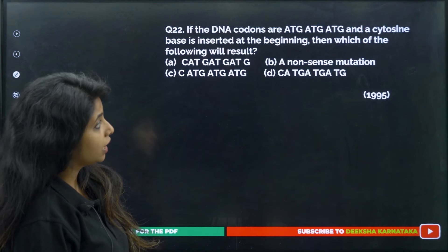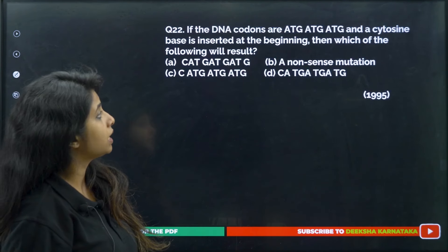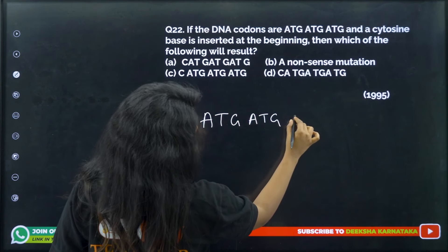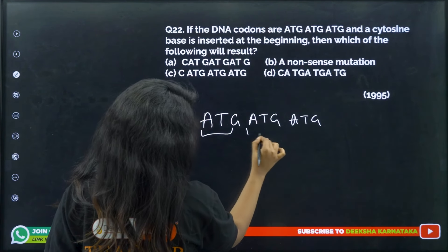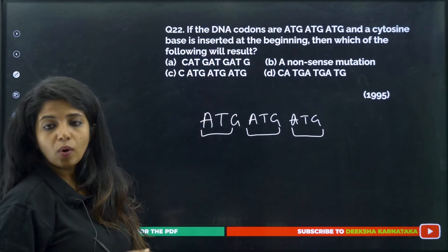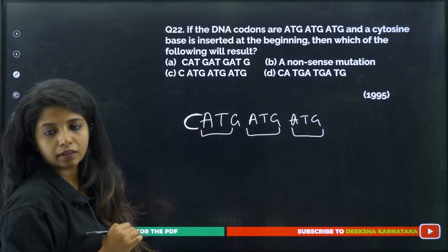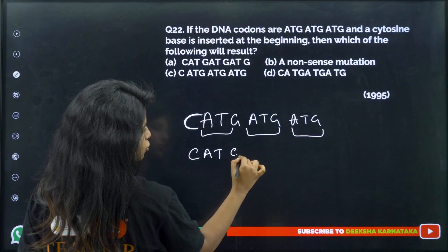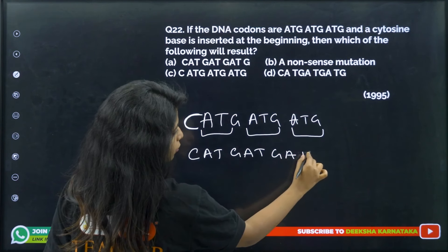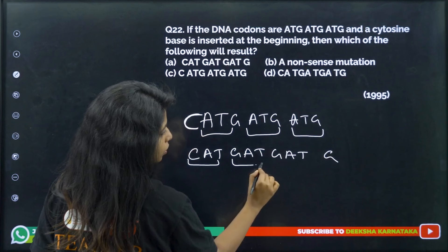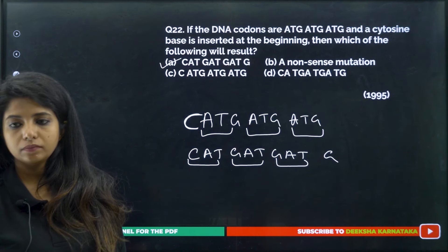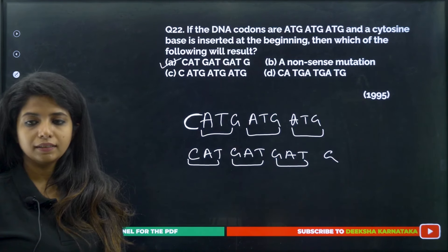If DNA codons are ATG-ATG-ATG and a cytosine base is inserted at the beginning, the sequence becomes C-ATG-ATG-ATG. This causes a frameshift: the new codons become CAT-GAT-GAT-G. So the reading frame shifts entirely, producing different codons. This is a frameshift mutation caused by insertion.